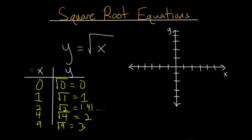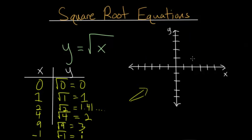Now if we try negative numbers — say x equals negative 1 — we want the square root of negative 1. But there is no real number that when multiplied by itself gives you negative 1. These numbers are in their own category called imaginary numbers, given the symbol i. You can't graph imaginary numbers on the xy plane, which deals with all real numbers only.